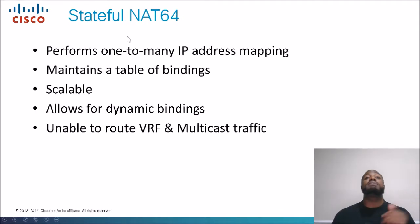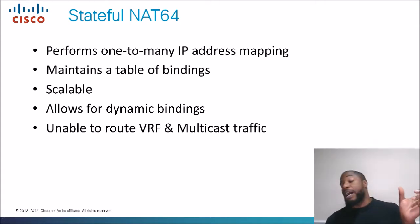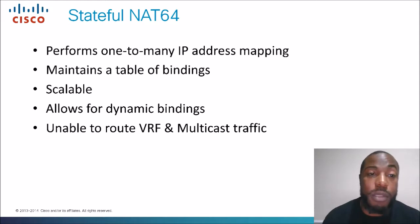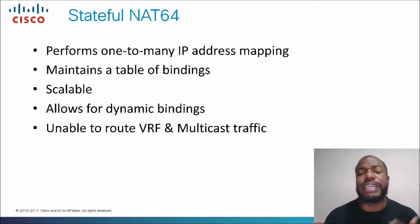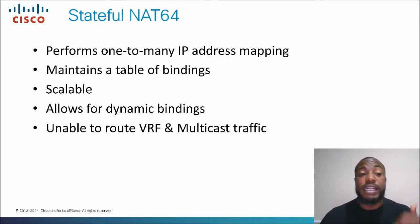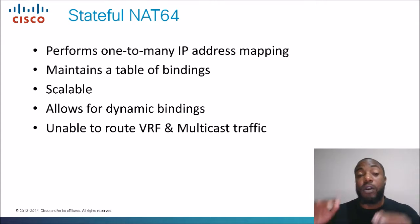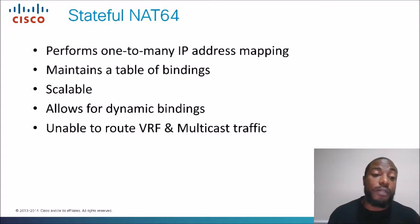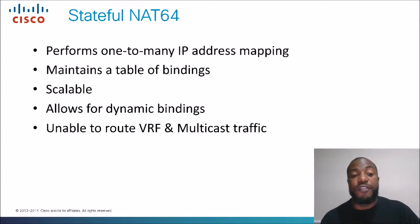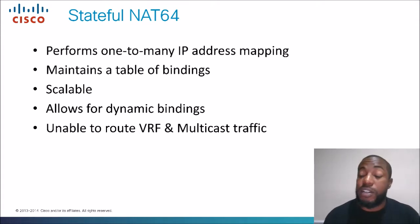Stateful NAT64 provides one-to-many IP address mapping, so you can have one mapping to many IP addresses. It maintains a table of bindings — that's the key difference between stateful and stateless, similar to the distinction between stateful and stateless firewalls: one keeps a record, one doesn't. It's scalable because it keeps all the records and supports one-to-many mapping, and it allows for dynamic bindings. However, one drawback is that it is unable to route VRF and multicast traffic.